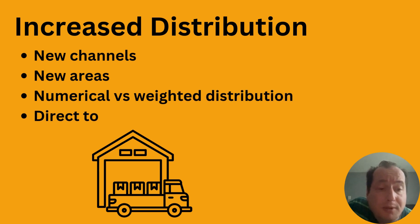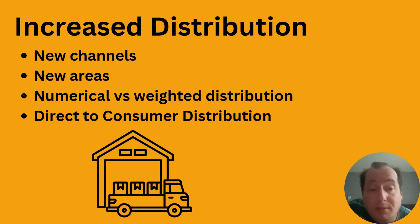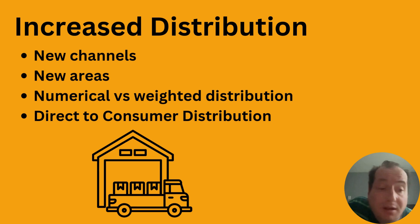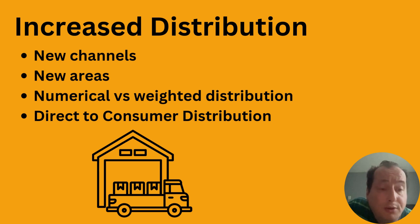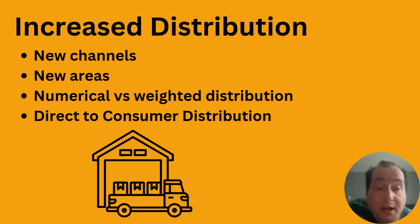Increased distribution basically comes down to new channels or new areas. New channels would be: I'm currently in supermarkets, but should I also be in traditional stores, in HORECA, in various other channels, or in e-commerce? New areas would be new geographic areas — expanding to other cities, other provinces, or rural areas rather than just urban areas.